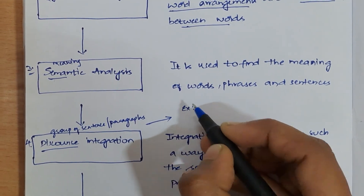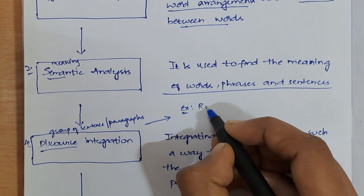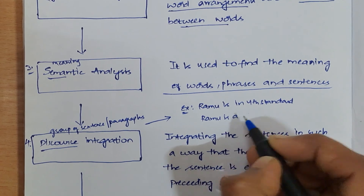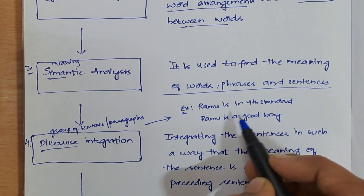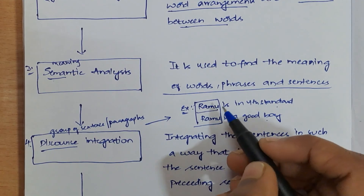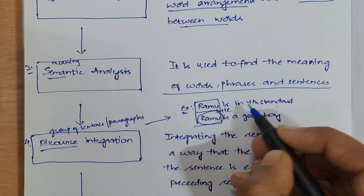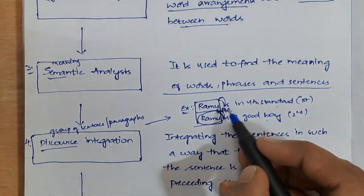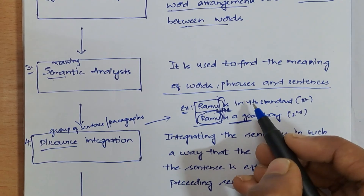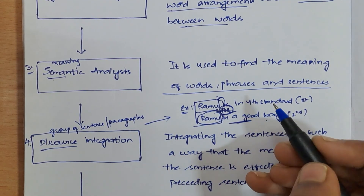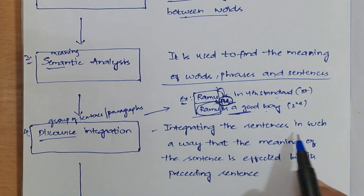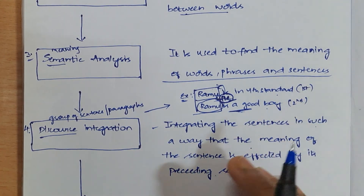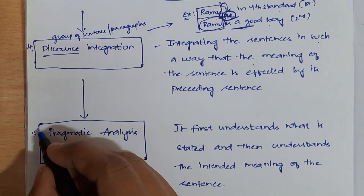For example: 'Ramu is in fourth standard. Ramu is a good boy.' Here both sentences refer to the same person named Ramu. Instead of writing Ramu every time, you can use the pronoun 'he'. So the second sentence is dependent on the first sentence. You integrate these two sentences using the pronoun 'he'. This is discourse analysis — integrating sentences in such a way that the meaning of a sentence is affected by its preceding sentence.